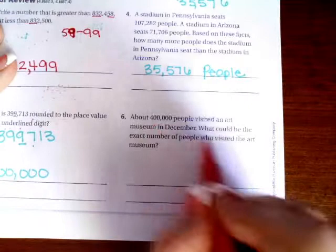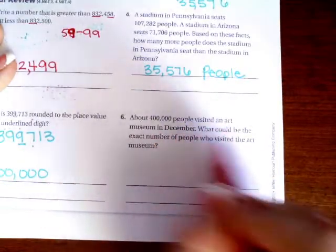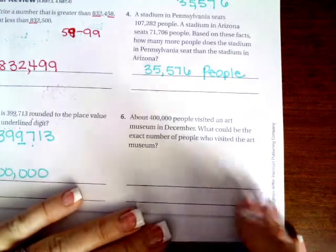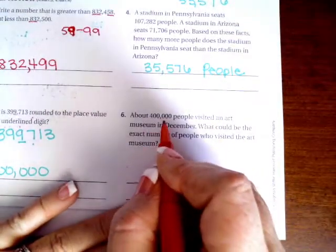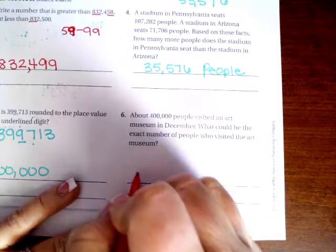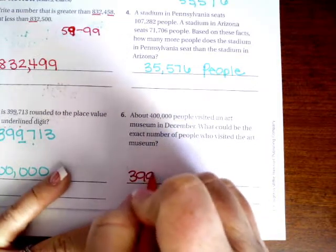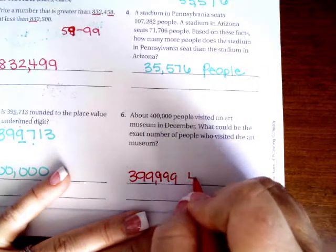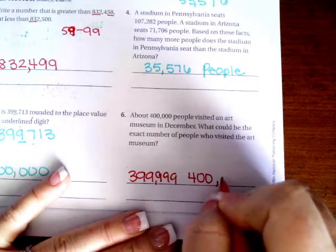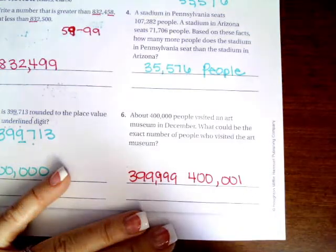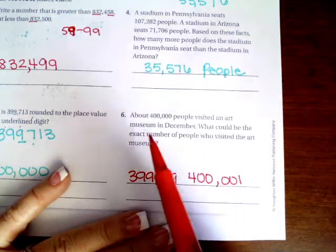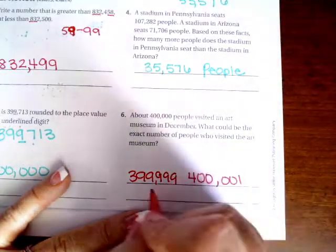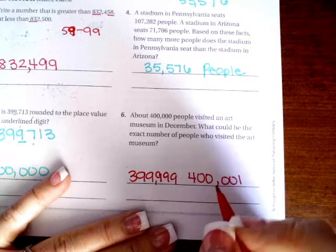About 400,000 people visit an art museum in December. What could be the exact number of people who visited the art museum? So I need any number that rounds to 400,000. So it could be 399,999. It could be 400,001. It could be any number that would round to 400,000.